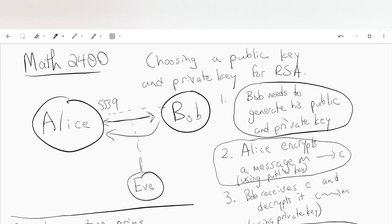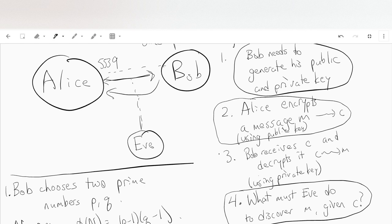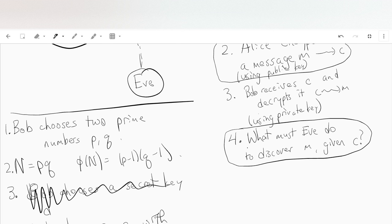Okay, so in this video we're going to explain how Bob can receive c and then get m back using the private key. Okay, let's see.